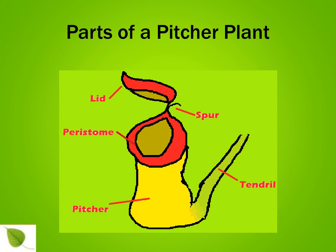Let's have a look at the parts of a pitcher plant. To begin with, this is called the lid. And this is the spur, which is a tiny outgrowth on the side of the lid.